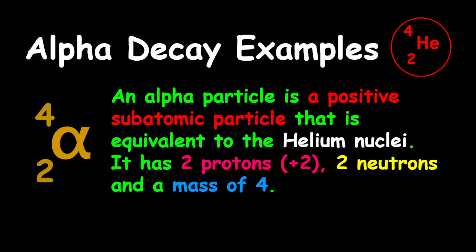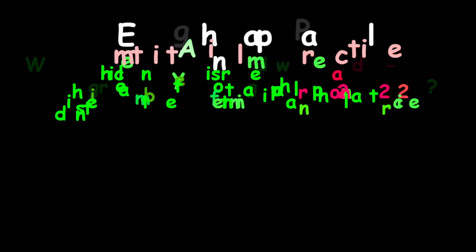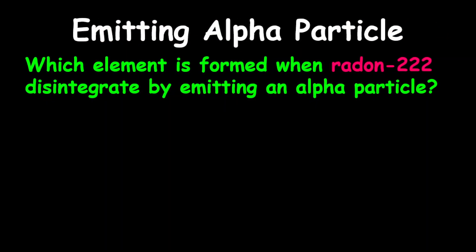For the first set of examples, we're looking at the emission of alpha particle. The first question reads: which element is formed when radon-222 disintegrates by emitting an alpha particle? By looking at the periodic table, you realize that radon has a proton number of 86.